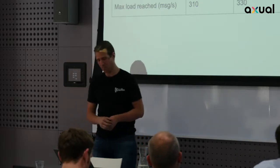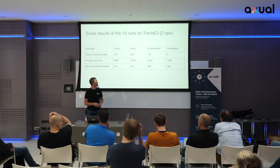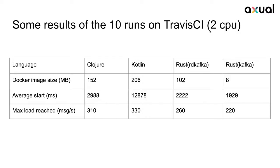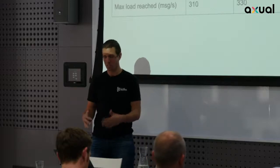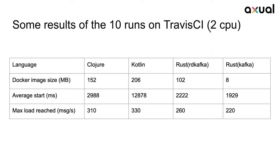These are some results from Travis CI — I also ran them first on my laptop but that's annoying since you can't use your laptop during the test. As you can see, the Rust image using the native Rust library gets down to just 8 megabytes. The Rust using rdkafka, which wraps the librdkafka library that recently got a 1.0.0 release, is somewhat larger, and the Kotlin and Clojure ones are larger still. For startup time — when everything starts up including the browser logging in — the Kotlin one takes almost 13 seconds while the others are a bit faster.